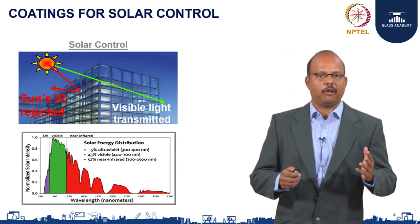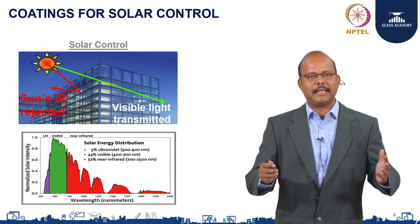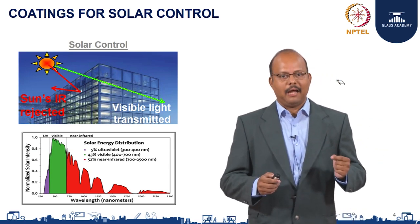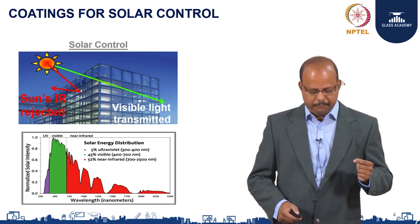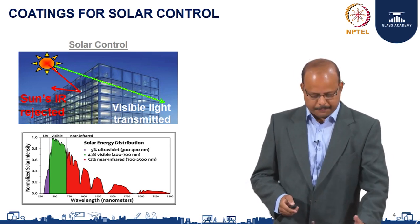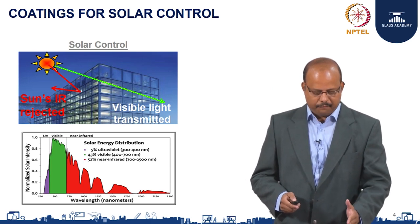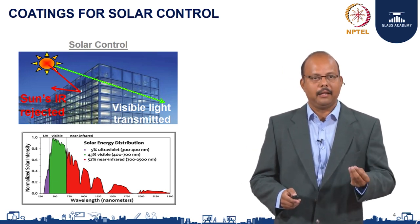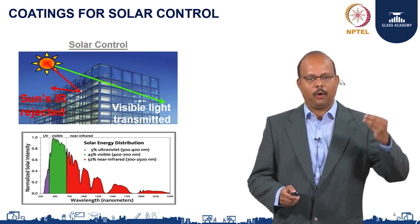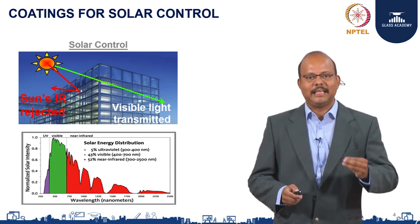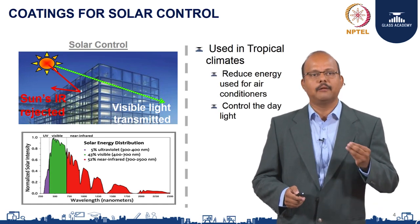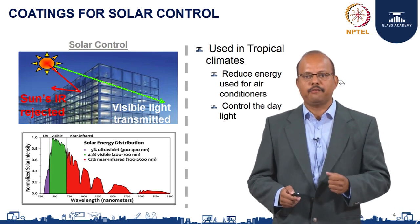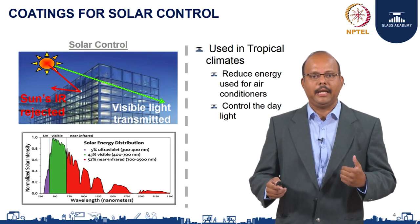The main functions of coatings in terms of thermal insulation and solar control we will see in detail here. In terms of solar control, we have the solar spectrum with the complete solar wavelength range. In terms of overall energy distribution, the idea is to let maximum sunlight inside the building and cut the solar heat outside. The coatings achieve this functionality, mainly in tropical climates, for reduced energy for air conditioners and controlling daylight entry into buildings.